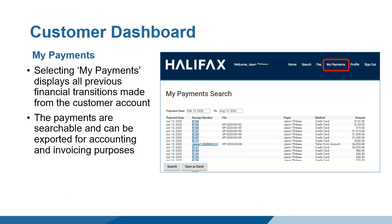The My Payments button opens a window displaying the customer's payment history. From here, the customer can see when the permits were paid and how much they paid. If a customer has never made a payment through the customer portal, a red message stating that they have not made payments yet will appear. The information in this window can be saved as an Excel file and used for accounting and invoicing purposes.